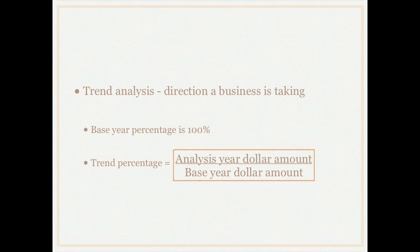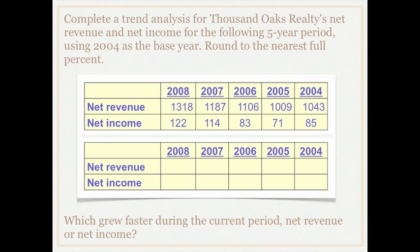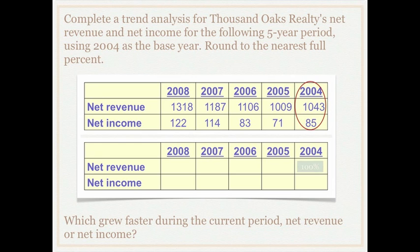Let's take a look at an example. Here we have Thousand Oak Realty's net revenue and net income for a five-year period, and we're going to use 2004 as our base year. We also want to determine which grew faster — net revenue or net income — during 2008, which we're calling our current year. Recall that our base year, 2004, will always be 100 percent.